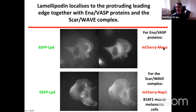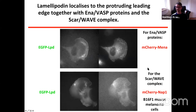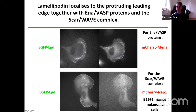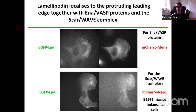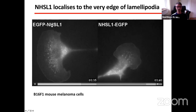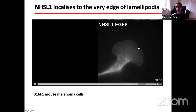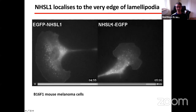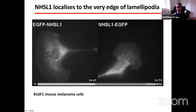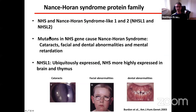As I told you, lamellipodin localizes to the very edge of lamellipodia when they protrude, co-localizing with VASP proteins (shown as mCherry-MENA) and the SCAR/WAVE complex (shown as mCherry-Nap1). We wanted to characterize more proteins that localize to the leading edge and which may also regulate the actin cytoskeleton, and we identified NHS-like 1 as a protein that localizes to the very edge of lamellipodia — visible when tagged either N- or C-terminally with GFP — and which also localizes to vesicles.